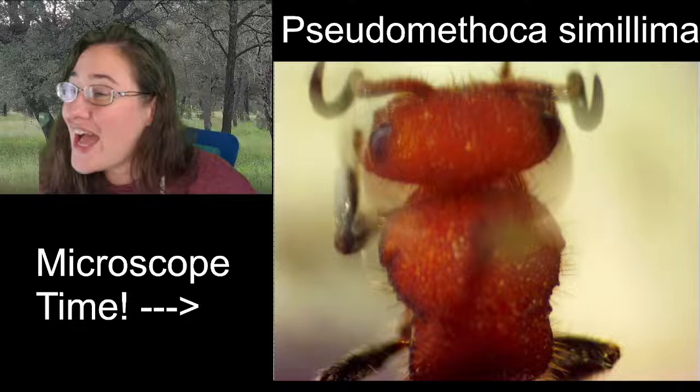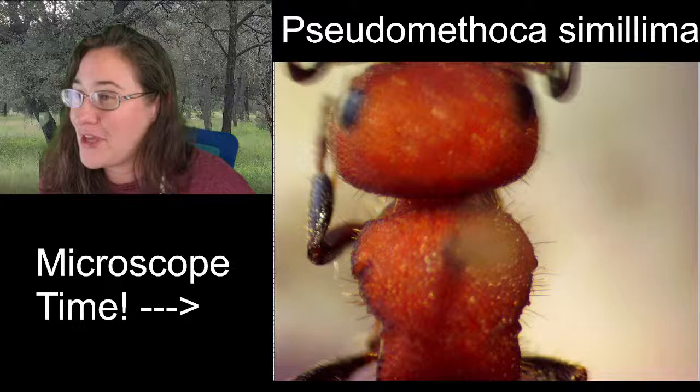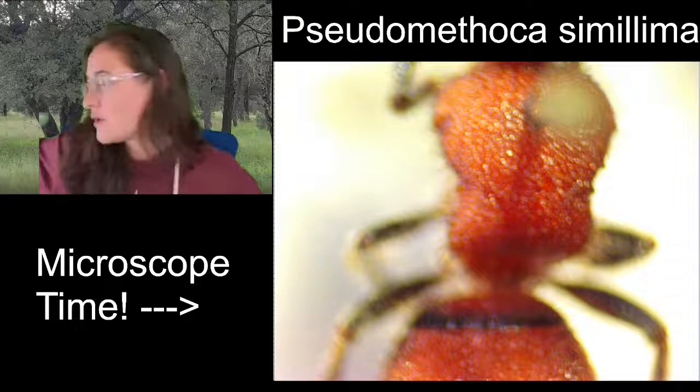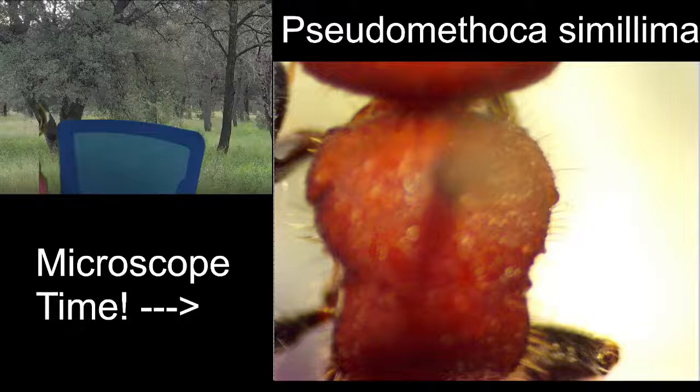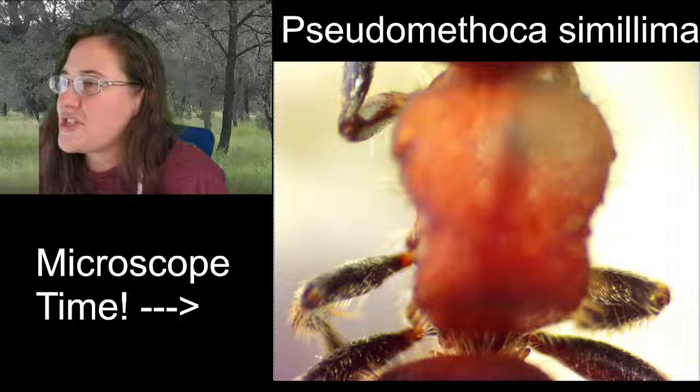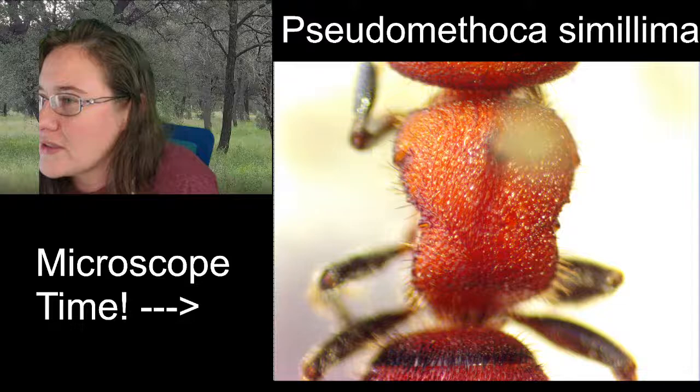I'm adding some punctation dots. Susan notes no ocelli — correct! Looking at the backside of the thorax, you can kind of see those three segments, or the three sections of the thorax.